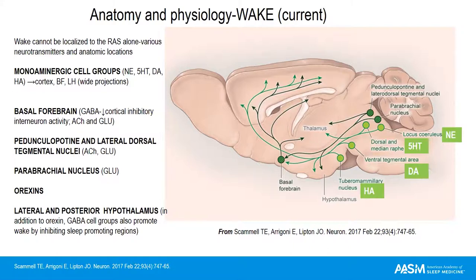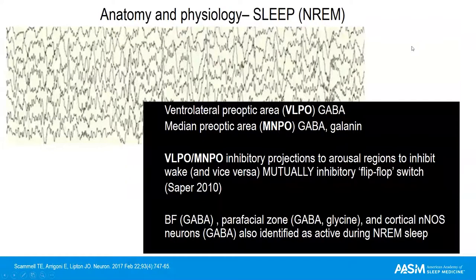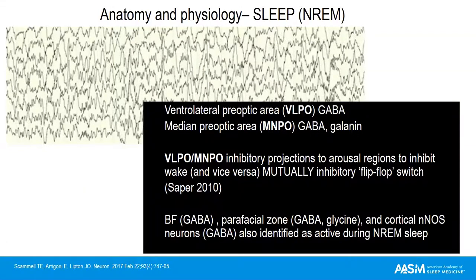Non-REM sleep generation takes place primarily in the preoptic area — the ventrolateral preoptic area through GABA transmission, and the median preoptic area through GABA and galanin transmission. These not only actively promote sleep but also inhibit wake. The basal forebrain, parafacial zone, and cortical nitric oxide synthase neurons are also active during non-REM sleep. We're learning more about other areas that promote non-REM sleep, but it primarily localizes to the preoptic area.